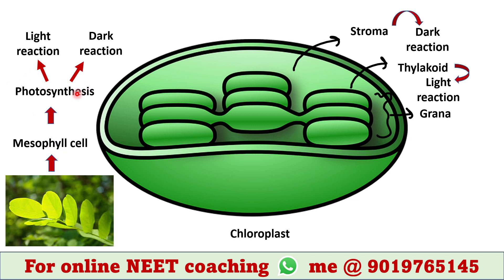In leaves, mesophyll cells are the place where photosynthesis occurs. In mesophyll cells, chloroplasts are present in the cytoplasm. This is the chloroplast. In chloroplasts there are thylakoids, which are sac-like structures, and they are stacked together in grana.